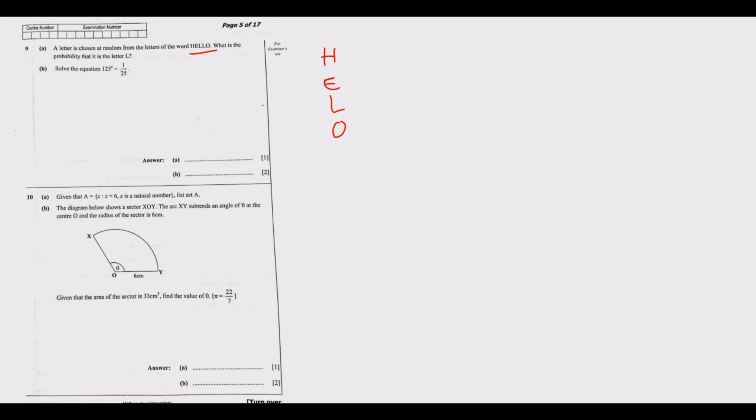So how many H are there? We have one. How many E are there? We have one. How many L are there? They are two. Then how many O's are there? They are one. So we get a total of letters, the total number of letters are five.